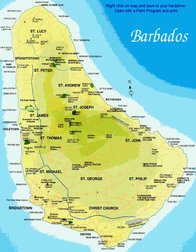In the parish of Saint Michael lies Barbados's capital and main city, Bridgetown, containing one-third of the country's population. Other major towns scattered across the island include Hulltown in the parish of Saint James, Oystens in the parish of Christ Church, and Spatestown in the parish of Saint Peter.